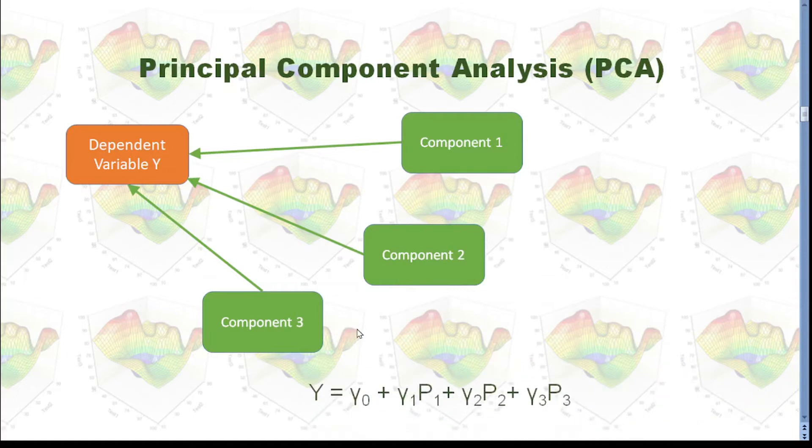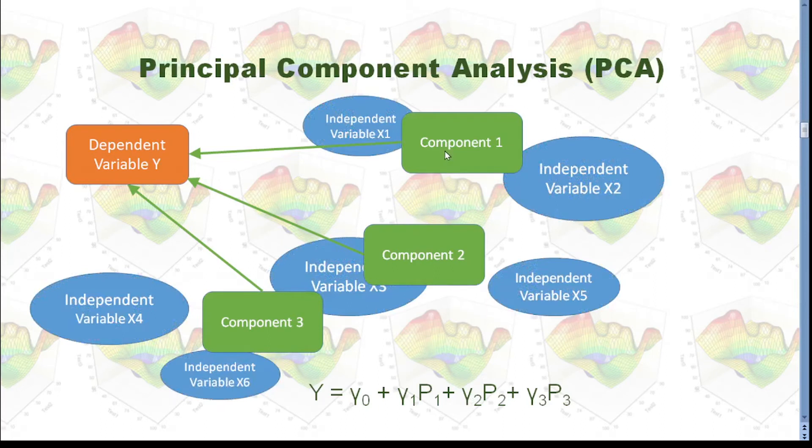And then we can convert our original model to this model, which has component 1, component 2, and component 3. Please remember all those principal components are linear combinations of all the independent variables. But it must be a linear combination. So this is the limitation of principal component analysis.